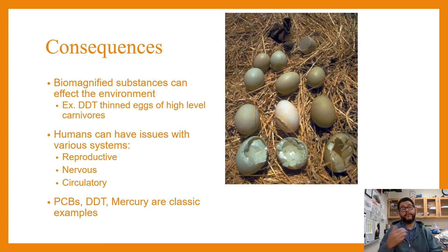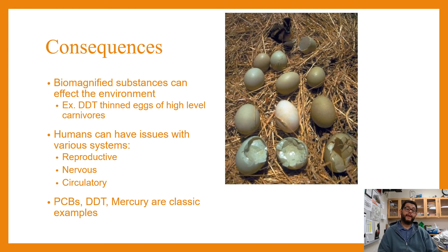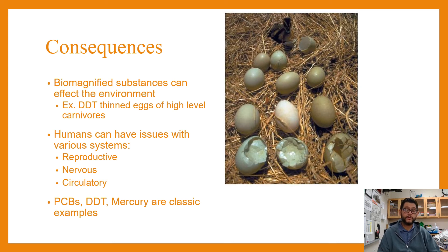You can also have other issues where these substances end up in your tissues and lead to reproductive, nervous, or circulatory problems. DDT is one example, PCBs are another, and mercury as well. Mercury is a teratogen, which is something that causes birth defects.